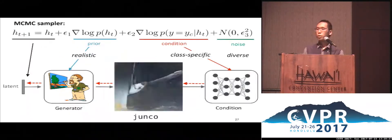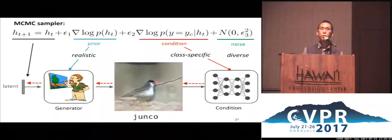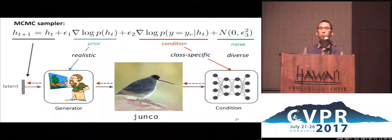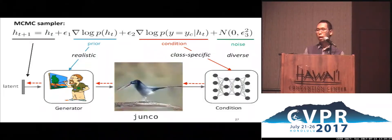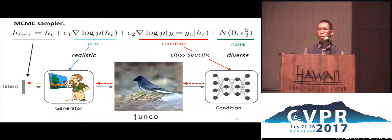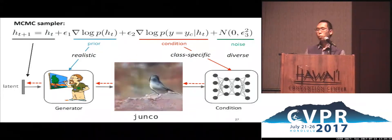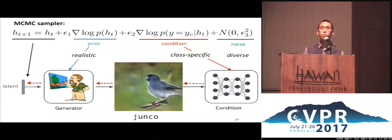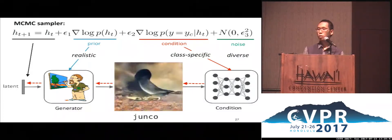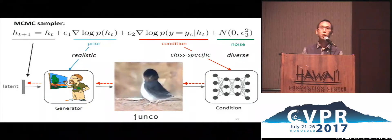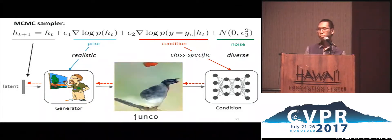Let's look at how we generate samples. The center video here shows images from an MCMC sampling chain conditioned on class Junko. In every update, we encourage the image to be realistic, class-specific, and diverse. One can see the sampling chain mixes well from one mode to another, perhaps because we sample in the lower-dimensional latent space.